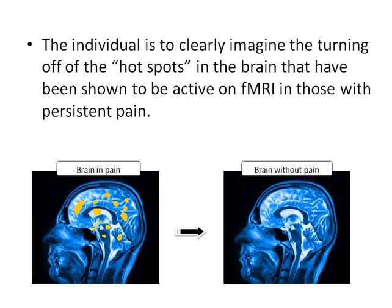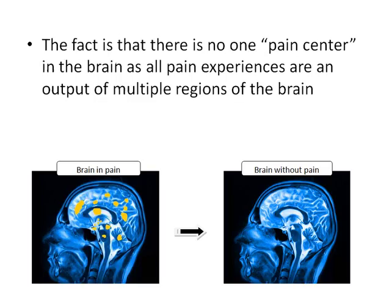The individual is to clearly imagine the turning off of the hotspots in the brain that have been shown to be active on functional MRIs in those with persistent pain. The fact is that there is no one pain center in the brain, as all pain experiences are an output of multiple regions of the brain.